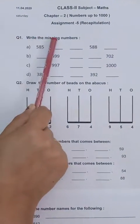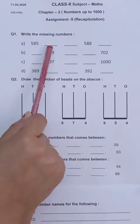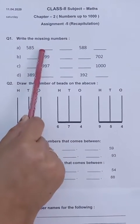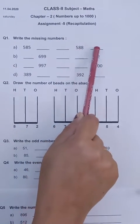Question 1. What is the missing number here? So it is 585. So what will you write after 585? 586, 587, 588 is already given. So we will write 589.